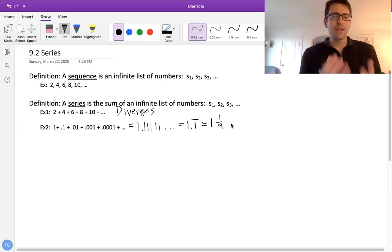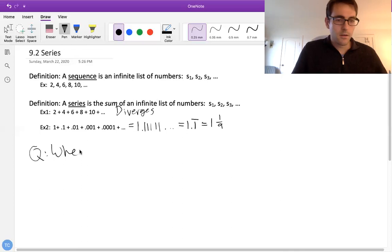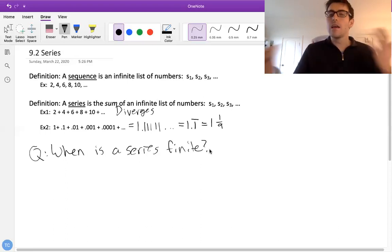And so this brings us to the question of how can you tell if a series converges or not? So the big question for not just this section, but really for the rest of the chapter is going to be when is a series some finite number, as opposed to some infinitely large thing?